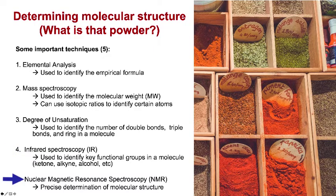The technique we are going to be concentrating on the most in this part of the course is nuclear magnetic resonance spectroscopy, or NMR. NMR can give us the most exact determination of a molecular structure. It will help us figure out exactly how atoms are connected together, even stereochemical information.